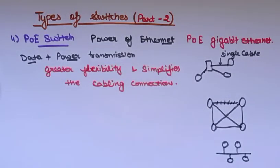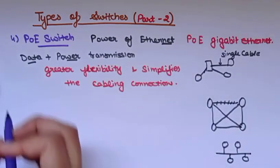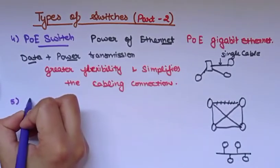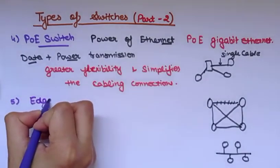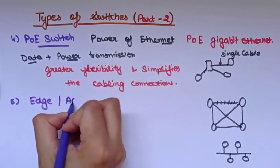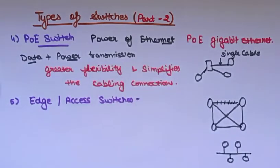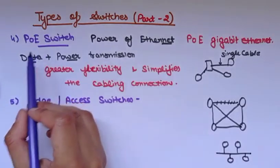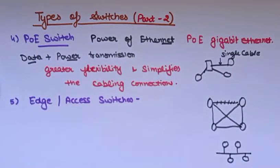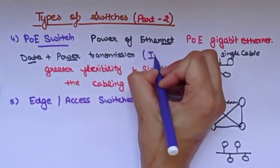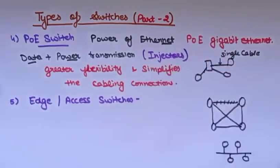PoE switches can provide both electricity and data, which is why they are mostly used and are very important types of switches. The next type is edge switches, also known as access switches. In the case of PoE switches, they are also known as injectors.